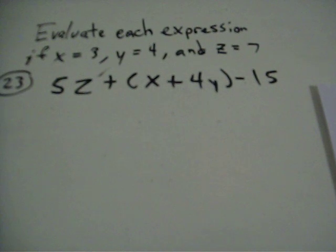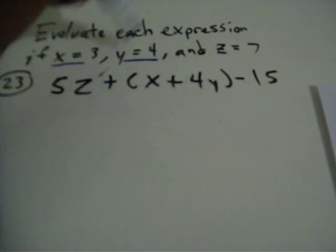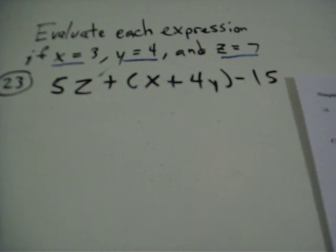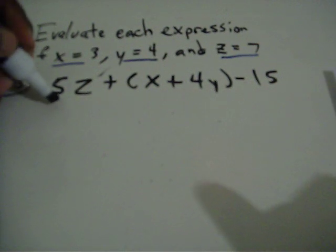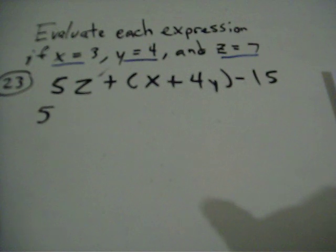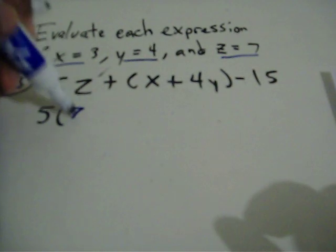What we have to do is replace each variable with the number that it's equal to. Now 5z is 5 times z. So in this case, z is 7, so I'm going to do 5 times 7.